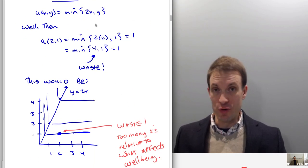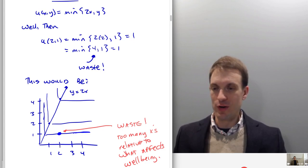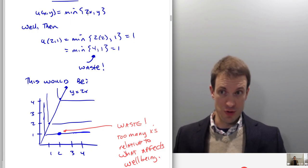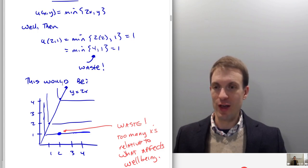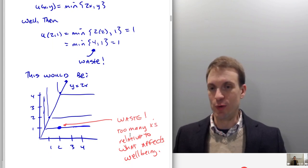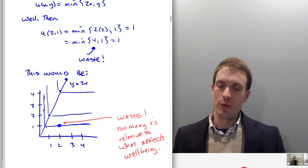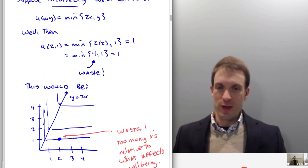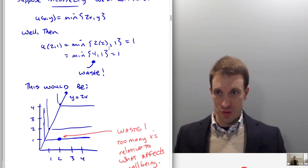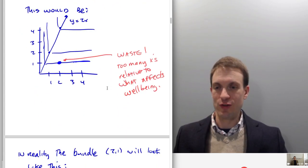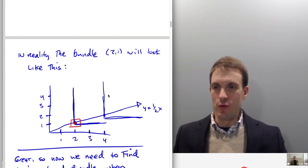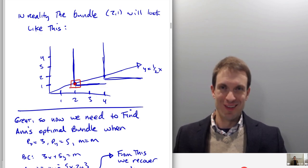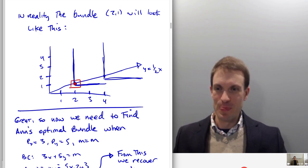Here's what would happen if we took the incorrect utility function: the bundle two cookies, one coffee would be out on the wing of the indifference curve, because that incorrect form gives the line y equals 2x, which is not the line we want — that would be wasteful. We always want to be consuming at the corners. The correct indifference curves have the bundle (2, 1) right at the corners.